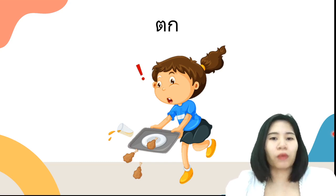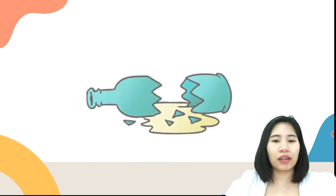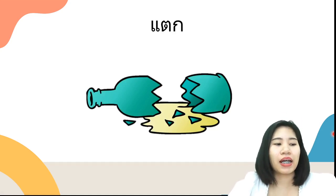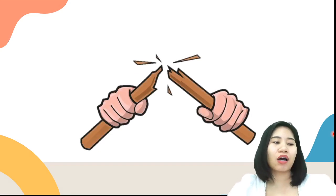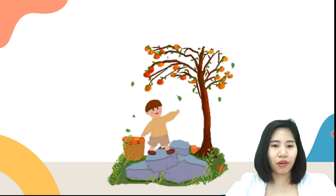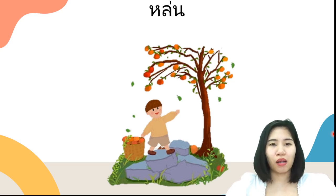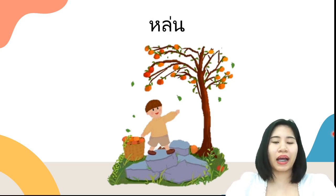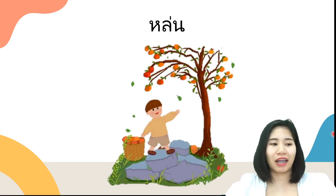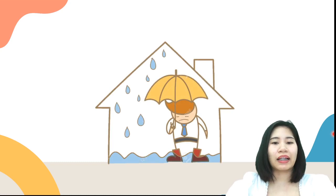Next one, fall or drop something in Thai we say ตก. Drop or fall in Thai we say หล่น, but most of the time we use the word หล่น if something fell off naturally. Next one, leak in Thai we say รั่ว.